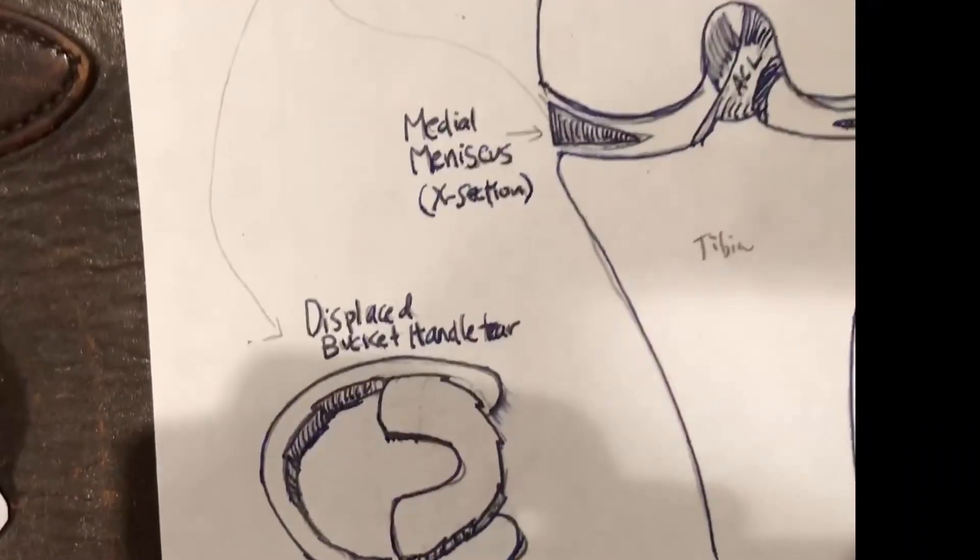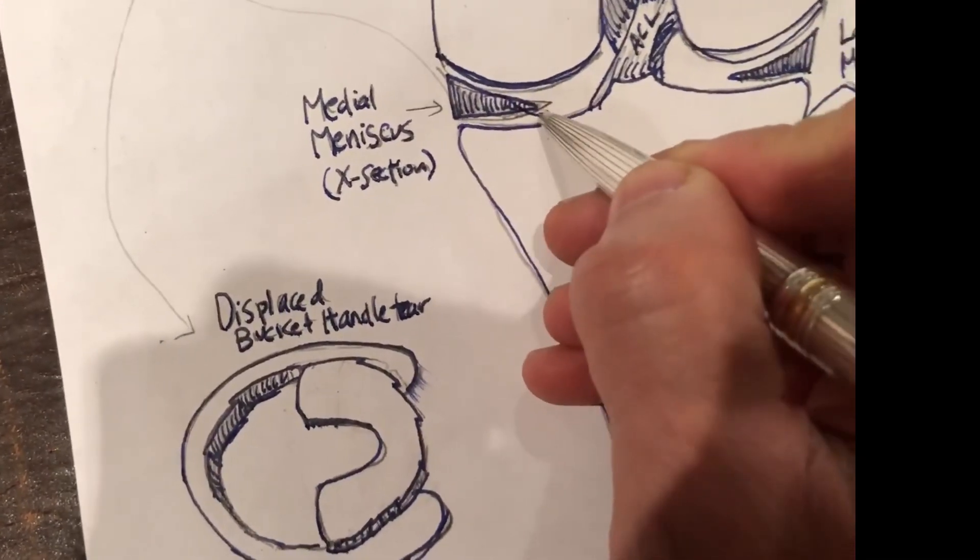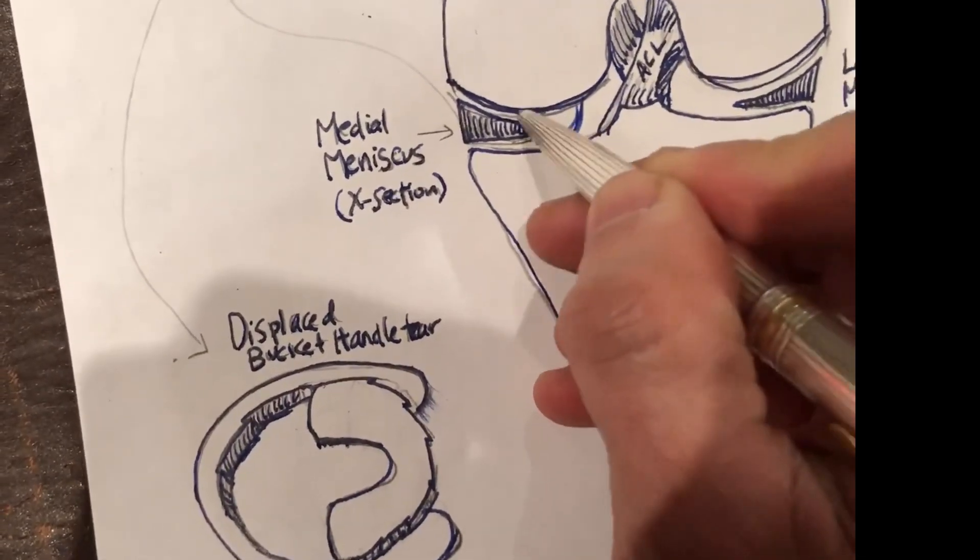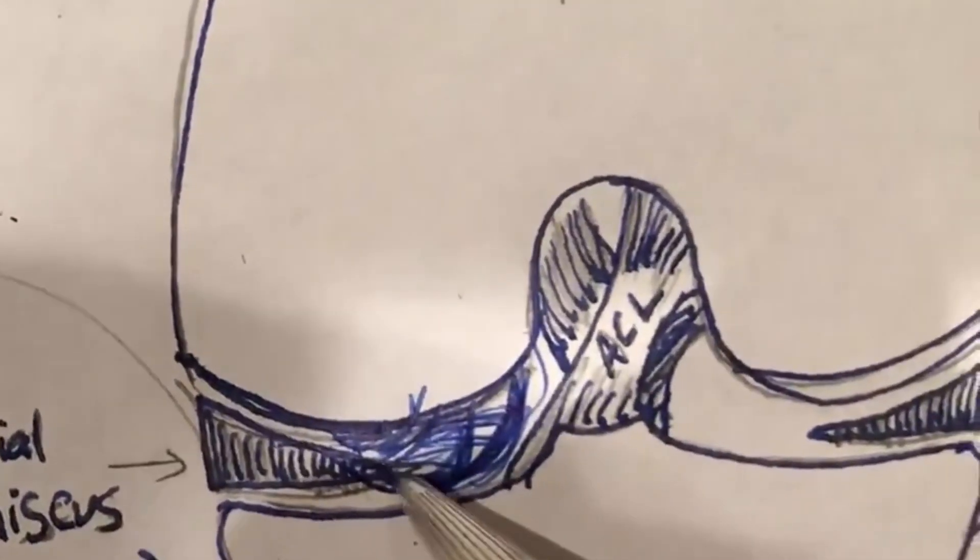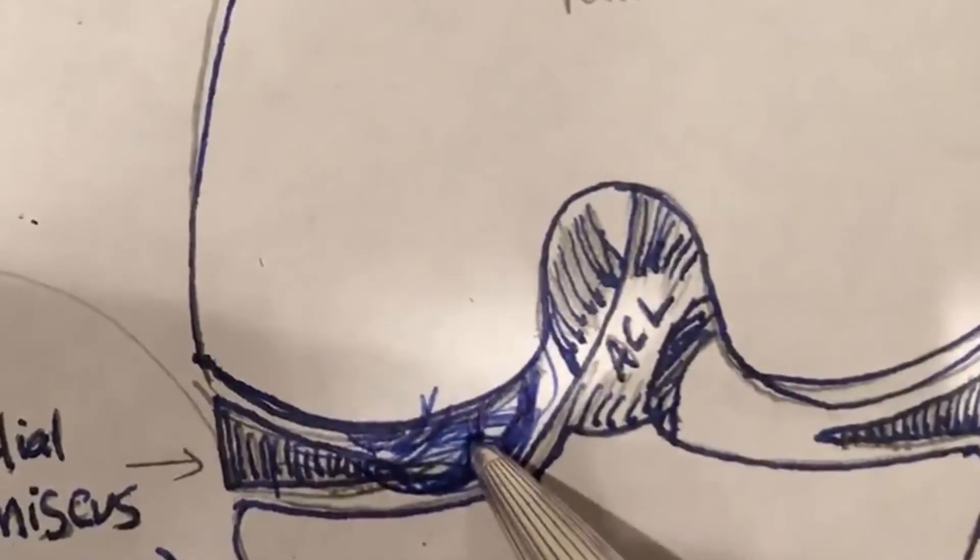So if we were to draw, there would be a big piece of meniscus over here, but there would be a portion that would go like this and would be caught. This piece would basically be over there.